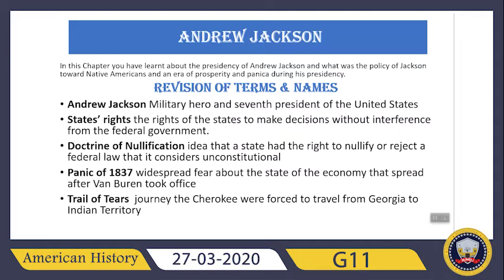You can read the doctrine of nullification in detail in your books, as I had already explained it in great detail in class. The next term is the Panic of 1837 — a widespread fear about the state of the economy that spread after Van Buren took office. Finally, the Trail of Tears was a journey in which the Cherokee were forced to travel from Georgia to Indian territory.